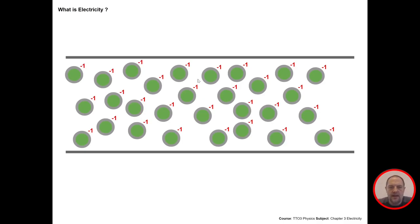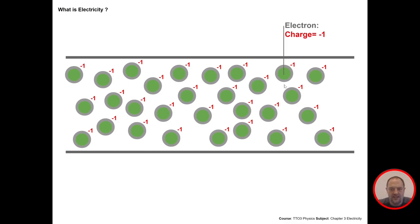There are two important things to remember about electrons. First, the charge of each electron is minus one — it always stays minus one, it won't lose its charge. In a circuit, the charge of the electron starts at minus one and ends at minus one — the charge always stays the same.